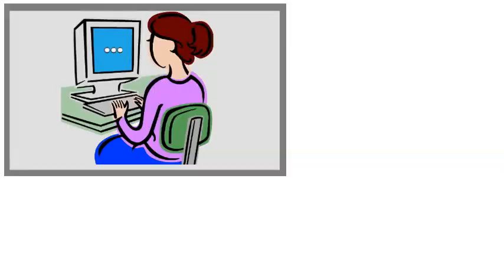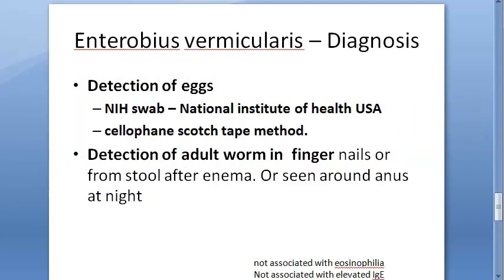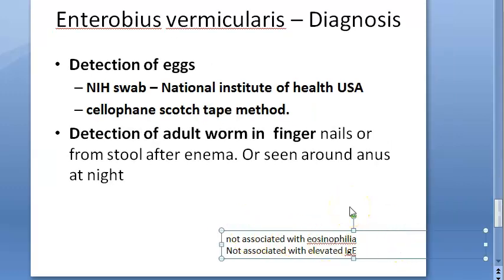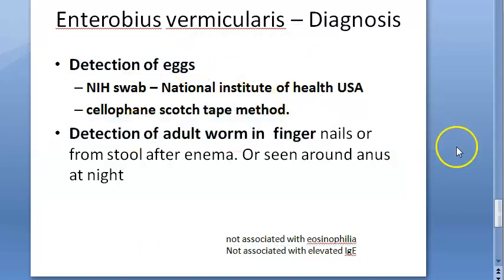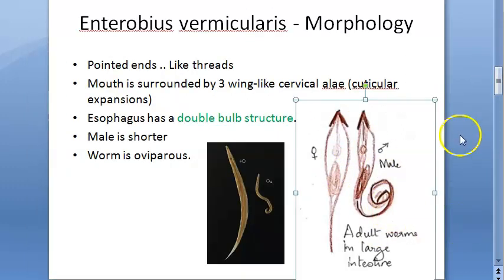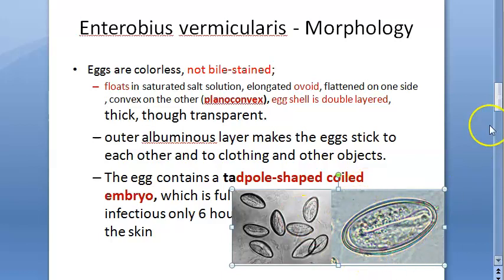Importantly, Enterobius vermicularis is not associated with eosinophilia or elevated IgE. For exams, draw diagrams: the adult worm showing three wing-like cervical alae as cuticular expansions, the double bulb esophagus, and the shorter male; and the egg showing a double-layered shell with the tadpole-shaped coiled embryo inside.